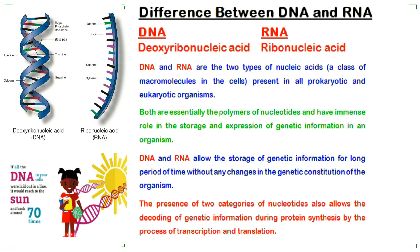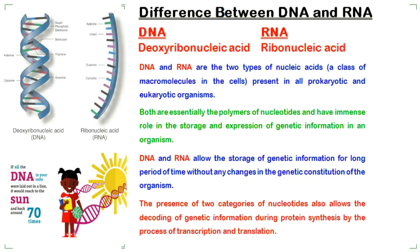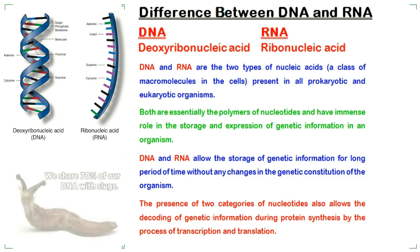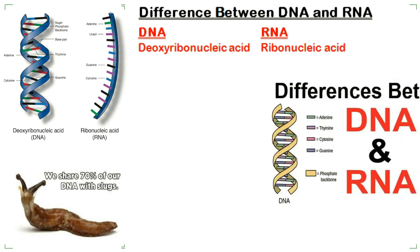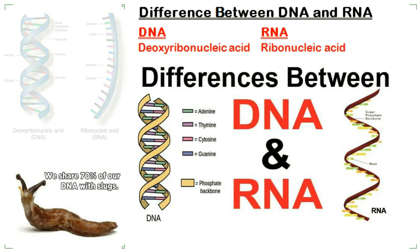DNA and RNA allow the storage of genetic information for a long period of time without any changes in the genetic constitution of the organism. The presence of two categories of nucleotides also allows the decoding of genetic information during protein synthesis by the process of transcription and translation. This video will explain the major differences between DNA and RNA.